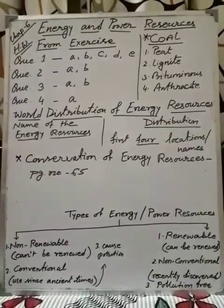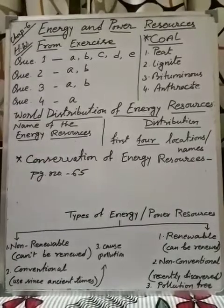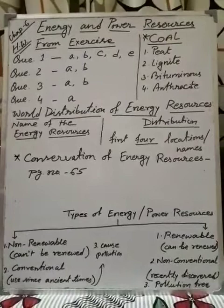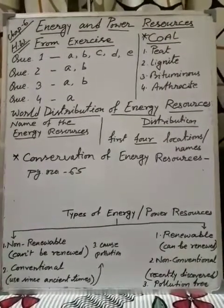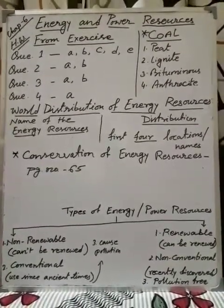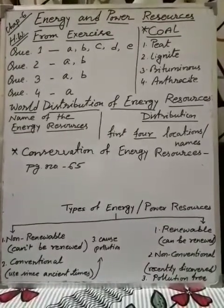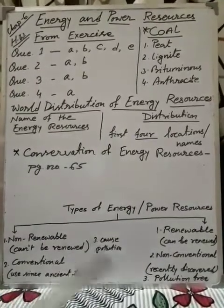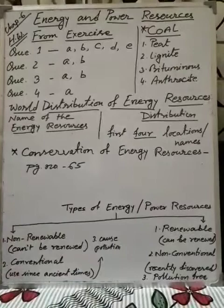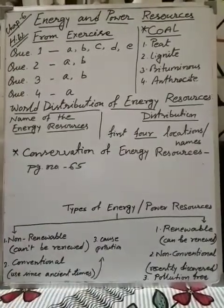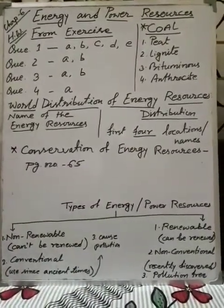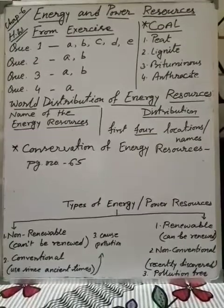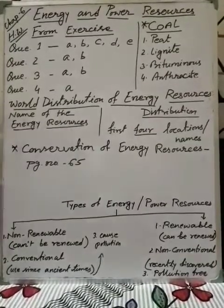There are four steps we can follow. We can follow the reuse, recycle, and reduce method. We can avoid the wastage of resources. We can use public transport more than private transport. And we can use renewable resources more than non-renewable ones, because renewable resources can be renewed and are pollution free. If we follow these four steps, we can conserve the energy resource.